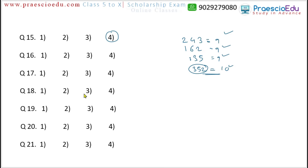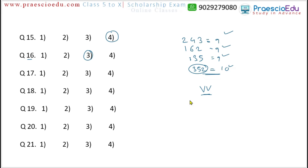In question 16, option 1 is the roman number for 9, option 2 is the roman number for 15, option 4 is the roman number for 6. But option 3 shows a double V, which is not a valid roman number. So option 3 for question 16 is the different one.